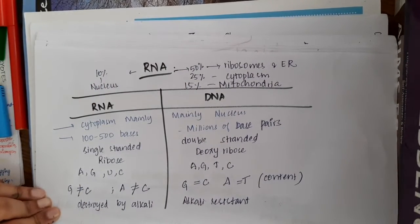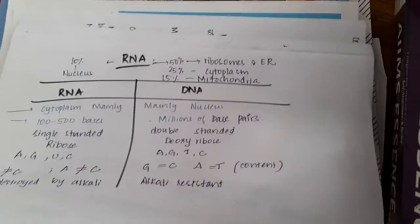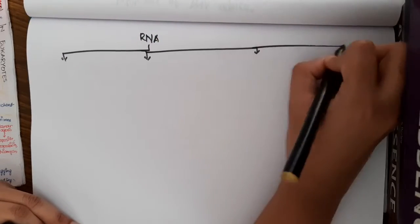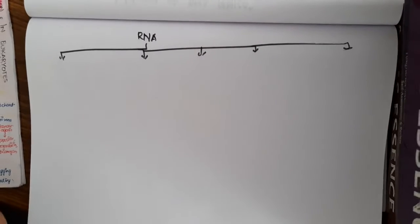So we have mainly 5 different types of RNA. RNA can be divided into 5 main types.